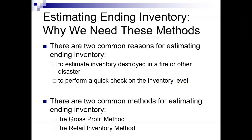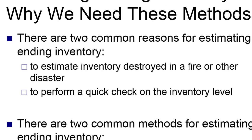Before we jump into methods, let's take a minute to talk about a couple of conceptual things. What are the two common reasons for estimating ending inventory? Sometimes we can't do a physical count because the physical inventory no longer exists — there's been a fire, a flood, an earthquake, a theft. The inventory is gone and I can't do a count, so I have to have methods available to me.